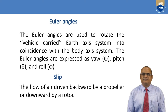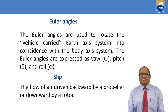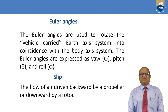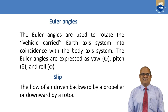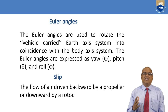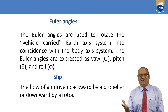Euler's angles are used to rotate the vehicle-carried earth axis system into coincidence with the body axis system. The Euler's angles are expressed as yaw (psi), pitch (theta), and roll (phi). These three angles define how much we rotate from the earth axis system to get to the body axis system, and from body axis to the earth axis system by applying the minus Euler's angle.